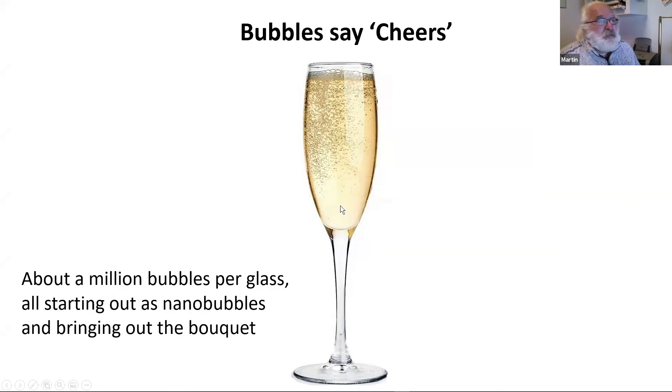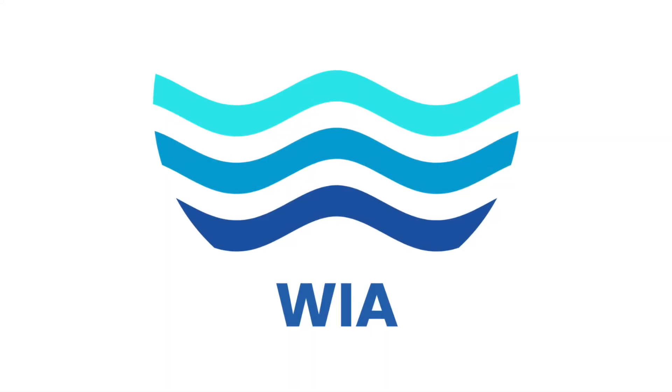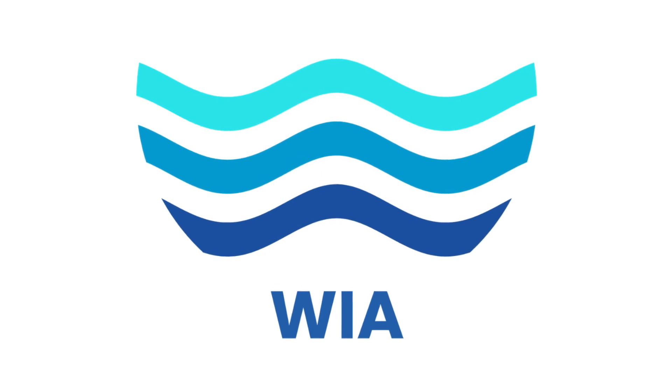In a glass of champagne, you can have up to a million bubbles, and these are formed from nanobubbles to begin with. They weren't there in the bottle. You couldn't see the bubbles in the bottle, but once you open the bottle, you got the nanobubbles, and those nanobubbles give you all the bouquet that you need. And that is where I finished. Thank you very much.